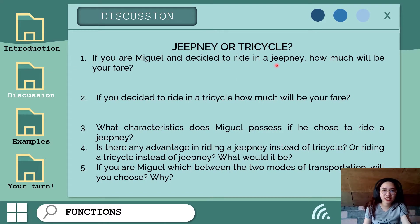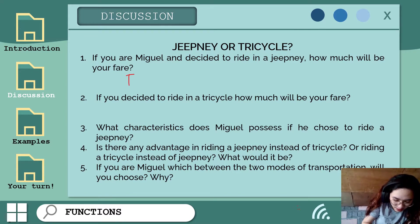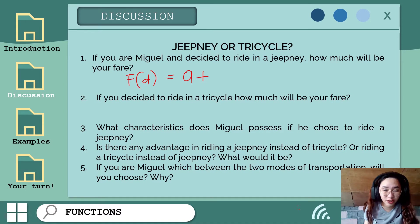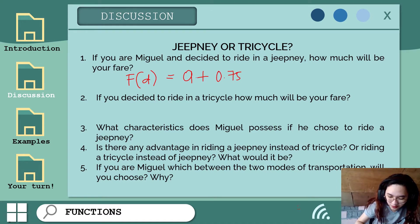If you are Miguel and decided to ride in a jeep, how much will be your fare? The distance between home and school is 15 kilometers, and the fare in jeep is 9 pesos for the first 4 kilometers and beyond that, you add 75 cents per kilometer. Let's use a function to represent the fare of jeepney after 4 kilometers. Let F(d) equal the fare, where D is the distance traveled after 4 kilometers. So we have 9 pesos plus D times 0.75.